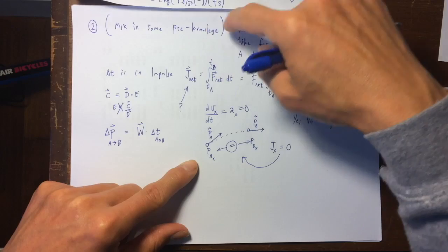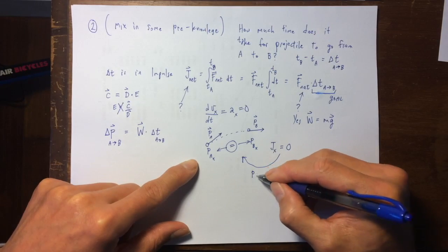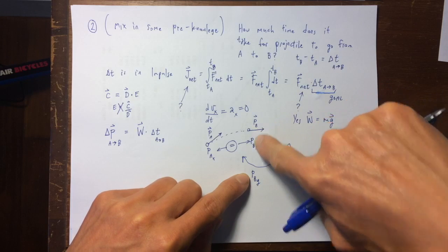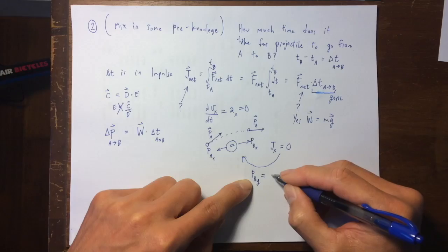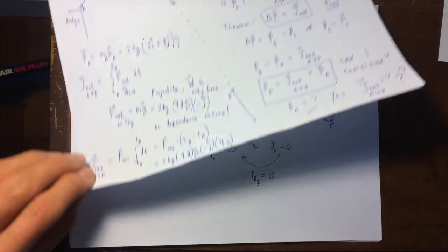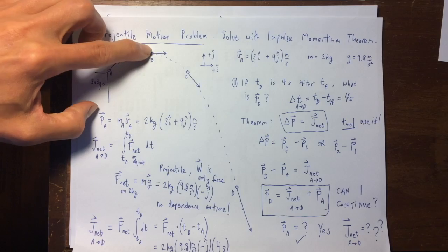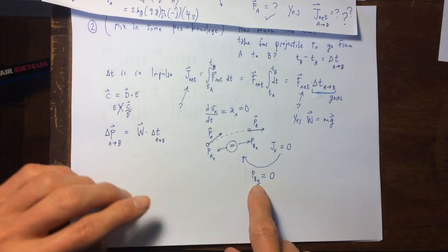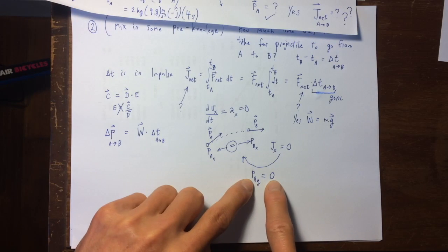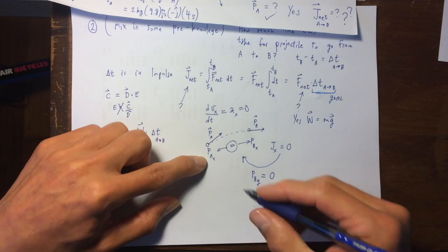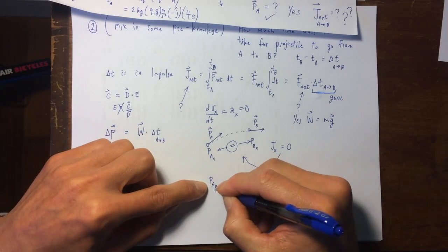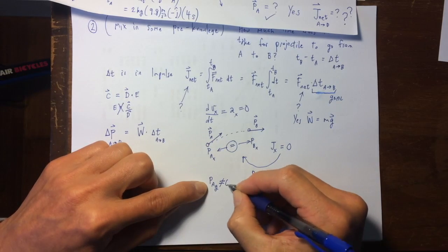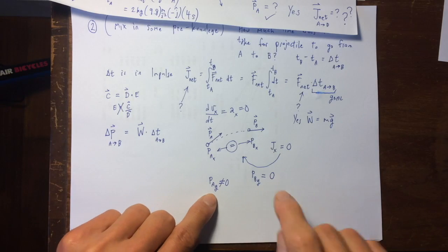Okay, so I've used this, but also some pre-knowledge. P sub b sub y, the momentum at the position b in the y direction, this is after it has lost all of the upwards momentum, and before it has gained any downwards momentum, so this is the time at which it has no y direction momentum.